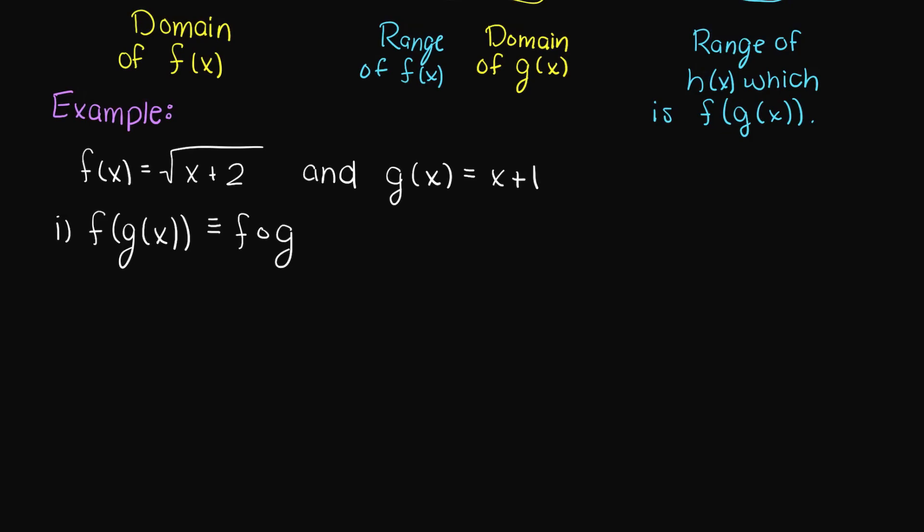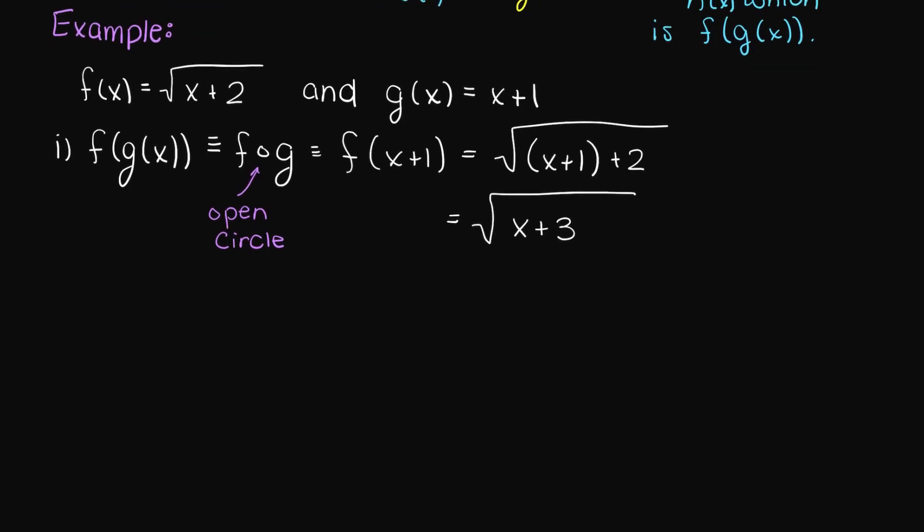So let's solve for the composite function f of g. So we begin by writing f of x and for every x we see we input g of x. This results in the square root of x plus 1 plus 2. Therefore, our composite function f of g of x is the square root of x plus 3.